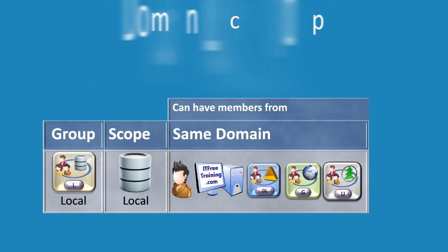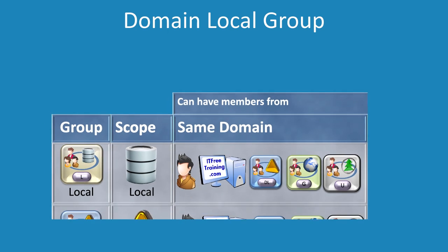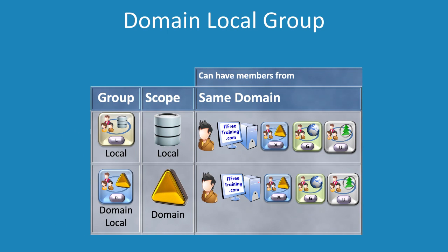The next group is the domain local group. This group supports all the same memberships as the local group — users, computers, other domain local groups, global groups, and universal groups. Given that domain local group membership can be administered at the domain level, these groups are often applied directly to the local resource. Domain local groups cannot be used outside the domain they were created in. In a multiple domain environment, this offers additional security by design — by creating a domain local group in your domain, you can be assured it is not being used outside your domain.